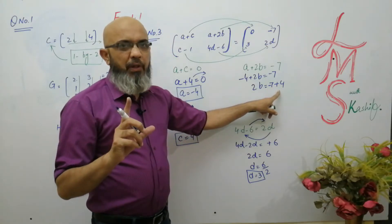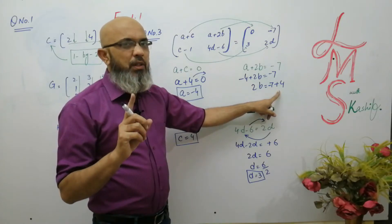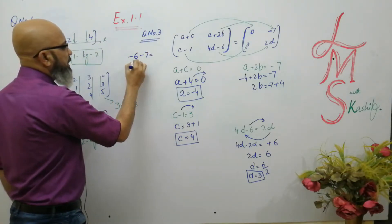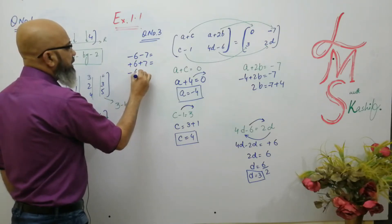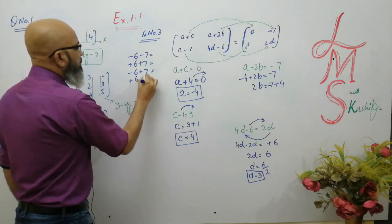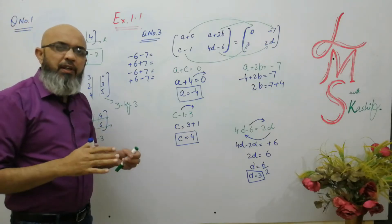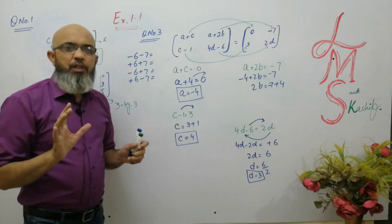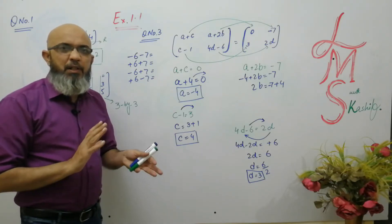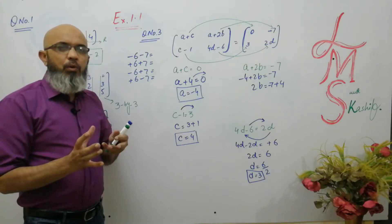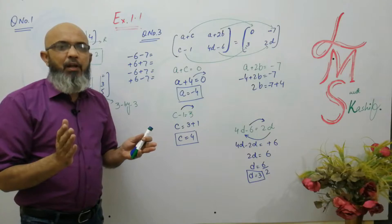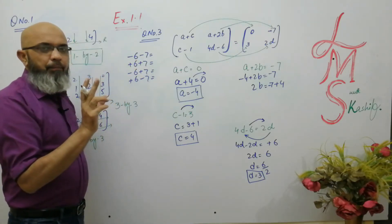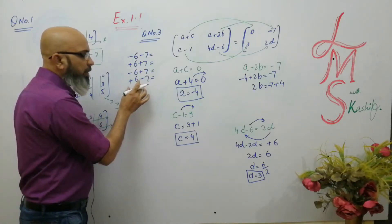When signs are different, we will subtract. When signs are the same, we will add. And the most important rule: always put the sign of the larger value. For example: −7 and −6 — signs are the same, so add, giving −13. +6 and +7 — signs are the same, so add, giving +13. −6 and +7 — signs are different, so subtract: 7 − 6 = 1, and the sign of the larger value (7) is minus... actually here 7 is plus, so the answer is +1. +6 and −7 — subtract: 1, sign of larger value (7) is minus, so −1.